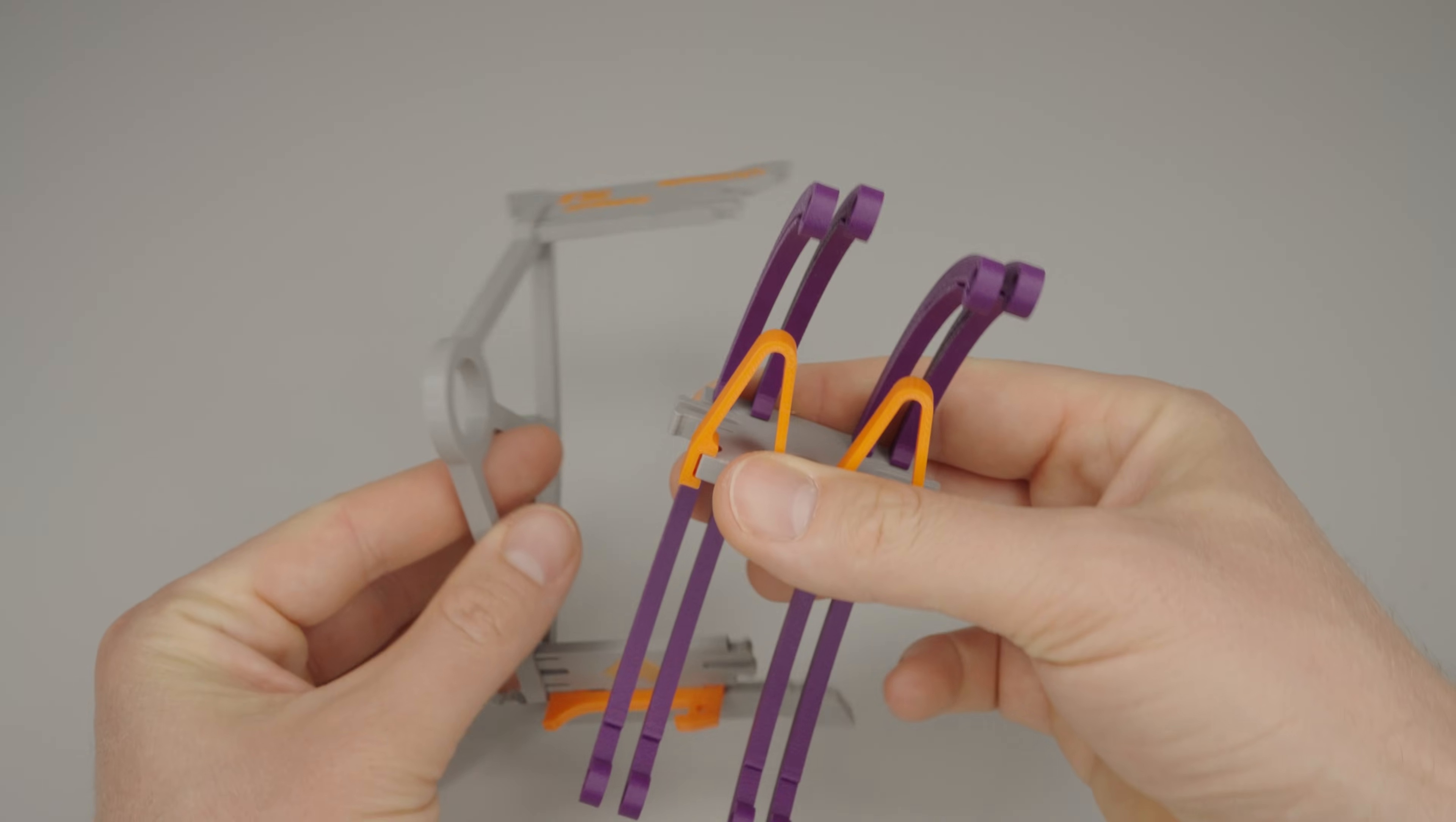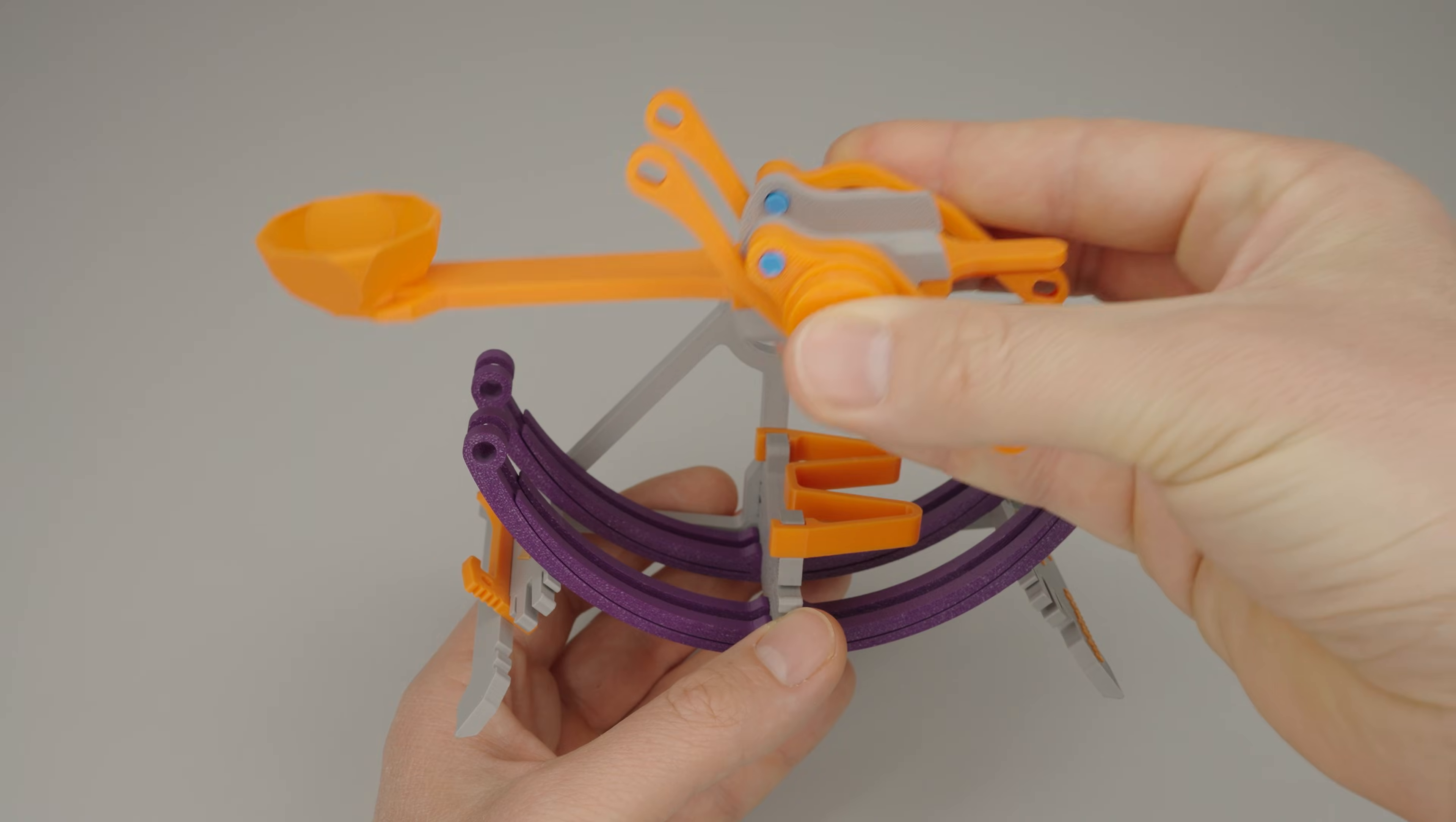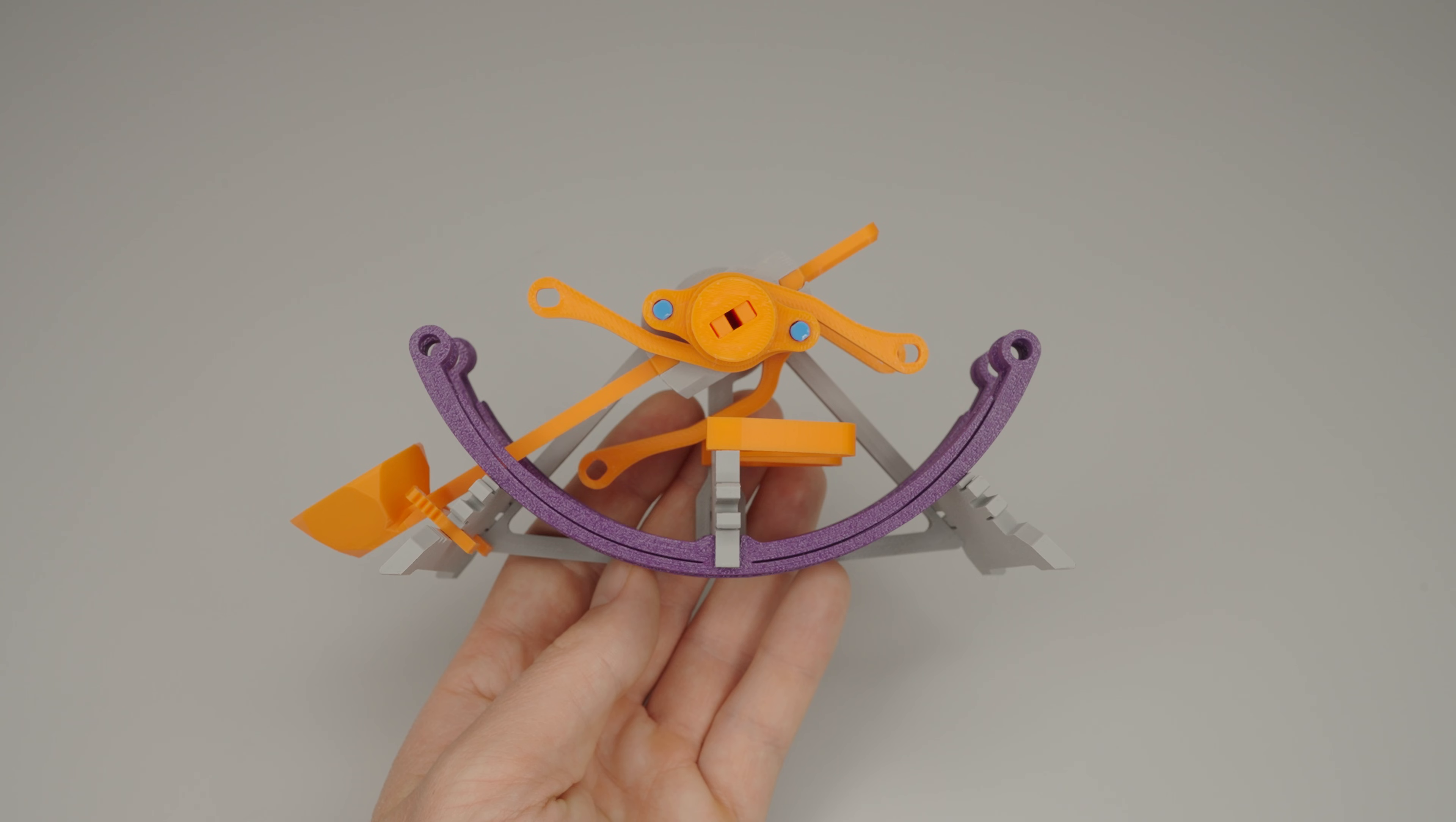Next, snap the assembled middle section into the side frame. Now insert the assembled throwing arm, making sure it points toward the locking mechanism.